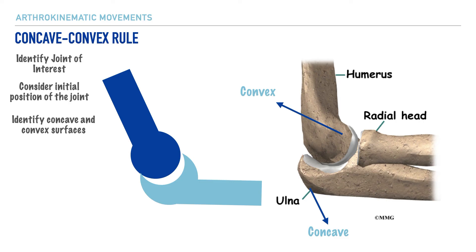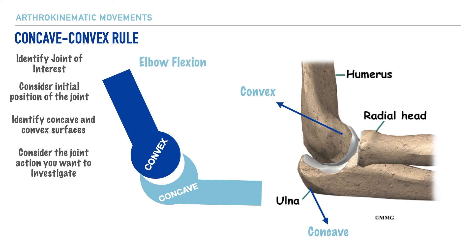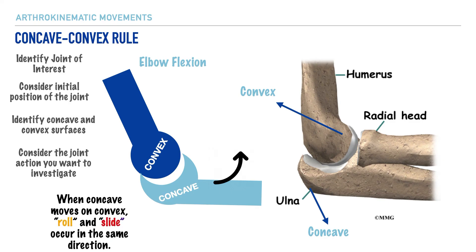On the left-hand image we can label these components just as we've done on the right. Now let's consider elbow flexion. In order for elbow flexion to occur, the concave structure moves upward on the convex, as indicated by the arrow. This movement is subject to the concave-convex rule: when a concave structure moves on a convex one, the roll and slide arthrokinematic movements occur in the same direction. The rolling motion occurs upward, and because the concave-convex rule applies, the sliding motion occurs in the same direction as well.